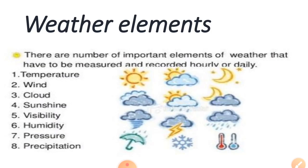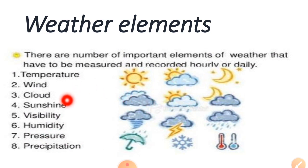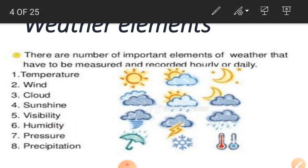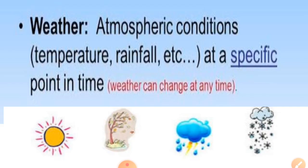Now let us look at the elements of weather. There are a number of important elements of weather that have to be measured and recorded daily. These elements are: temperature, wind, cloud, sunshine, visibility, humidity, pressure, and precipitation.